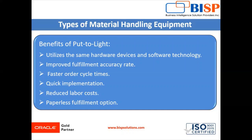Put-to-light is essentially the inverse of pick-to-light — simply reverse the flow. A put-to-light system guides the operator to organize incoming goods into retail store groups, customer orders, or other organization methods. Both pick-to-light and put-to-light work best at high densities, providing a better return on investment in high-density areas, because units are moved more often and the clear lighting system helps operators identify the right item quickly.